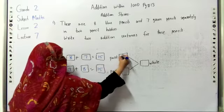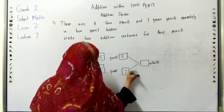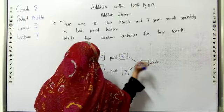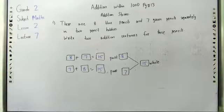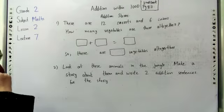So the answer is fifteen. Eight plus seven is equal to fifteen. Now let's do...